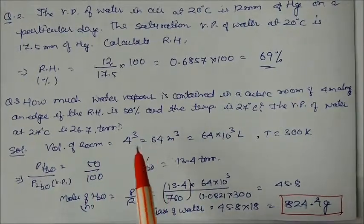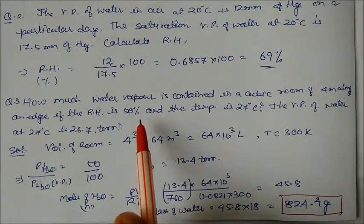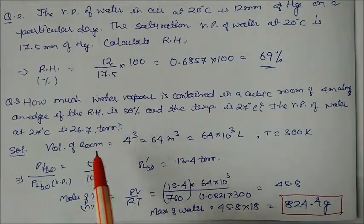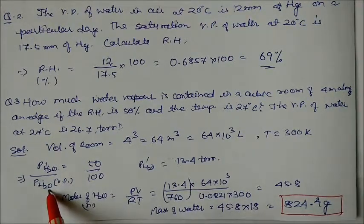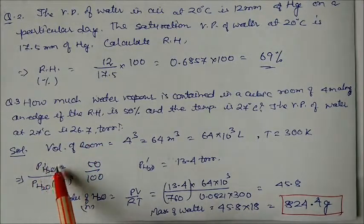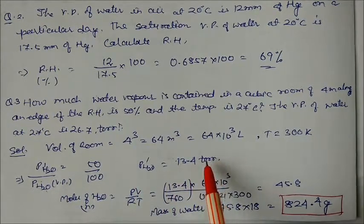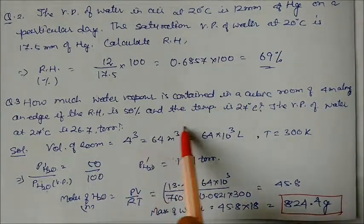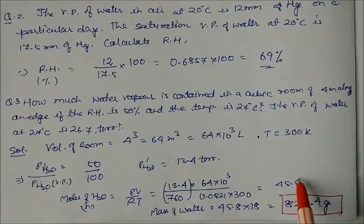Problem 3: How much water vapor is contained in a cubic room of 4-meter edge length if relative humidity is 50% and temperature is 27°C? Vapor pressure of water at 27°C is 26.72 mmHg. Partial pressure of water = 50% × 26.72 = 13.42 mmHg. Using PV = nRT with volume of room (4³ = 64 L... or 64,000 L) and T = 300 K, moles of water = 45.8, and mass = moles × 18 ≈ 824 grams.